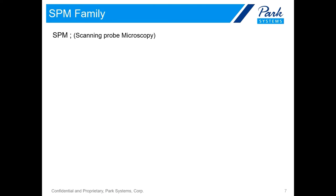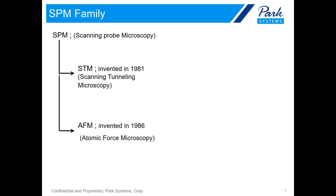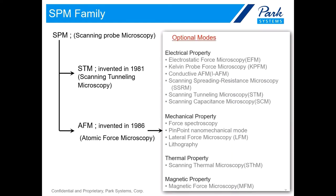Here is the SPM family. Starting from STM, the scanning tunneling microscope, AFM was invented in 1986. After that, many kinds of measurement modes were developed, meaning we can explore electrical, mechanical, thermal, magnetic, or electrochemical properties using AFM. And now some other new optional modes are being developed.